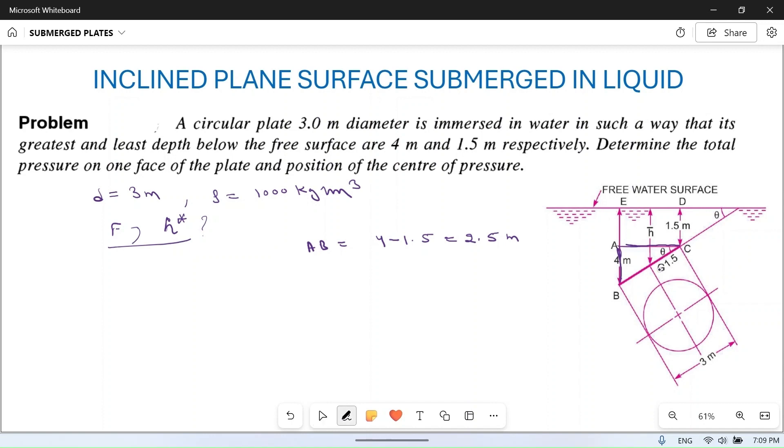BC is 3 meters, which is the diameter of the circle.